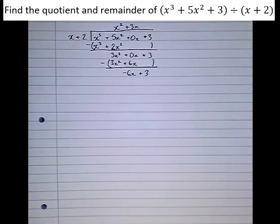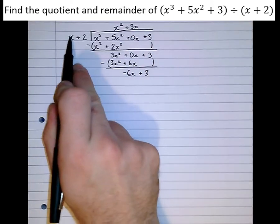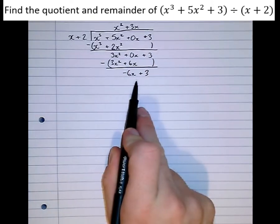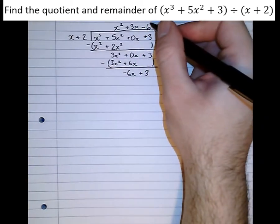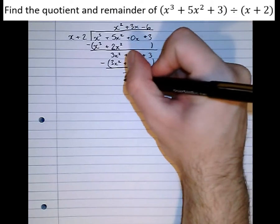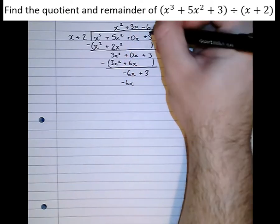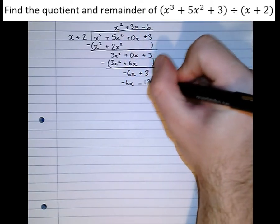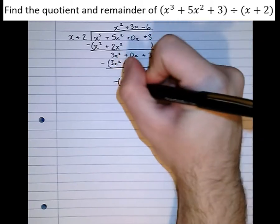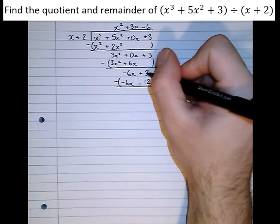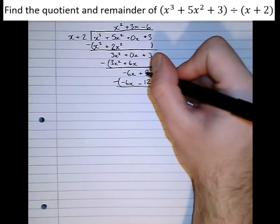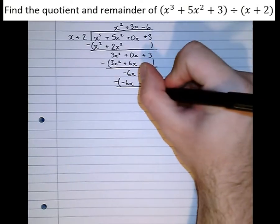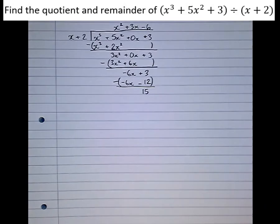And again, repeat. Highest power of x here into the highest power of x here becomes minus 6. Take what we've just written and multiply. We get minus 6x minus 12. Subtract. Minus 6x double minus 6x is 0. 3 minus minus 12 is 15. And we've got it. The quotient is this part here. And the remainder is this part here.